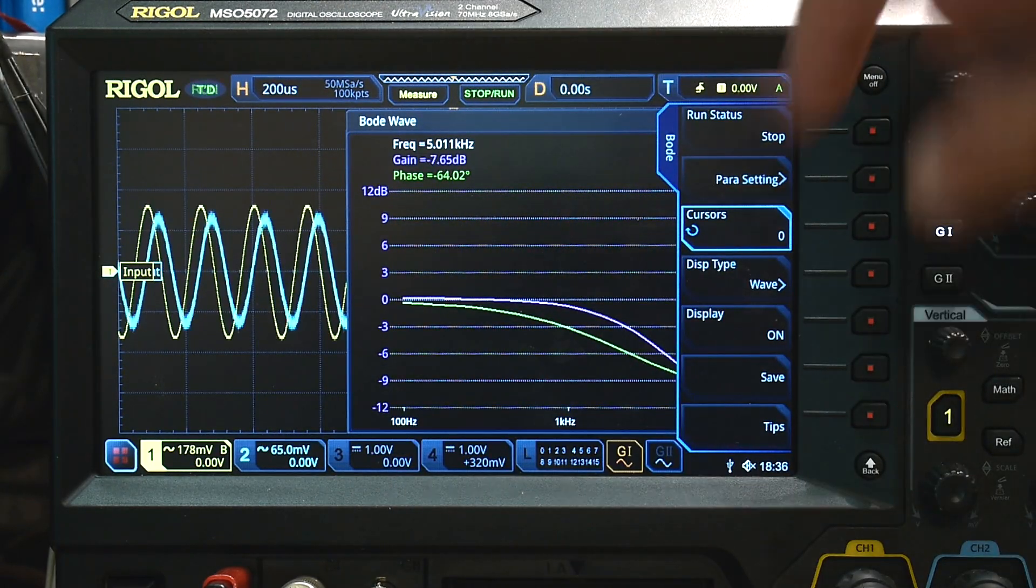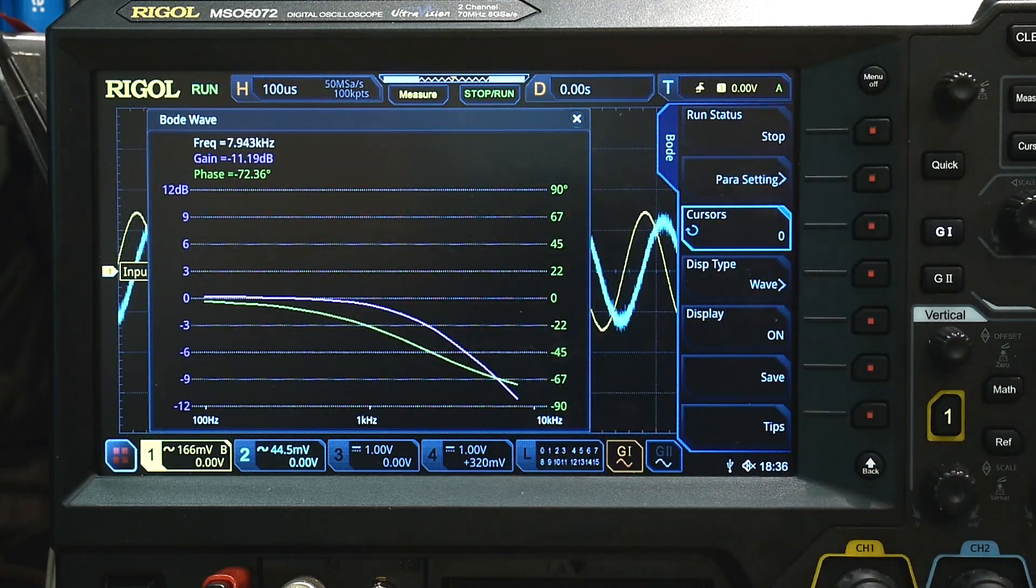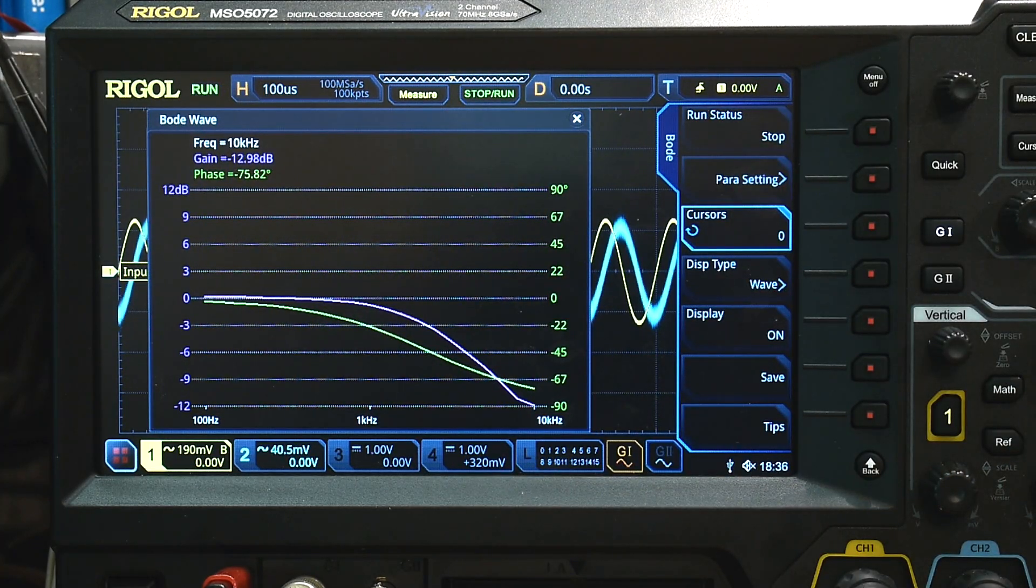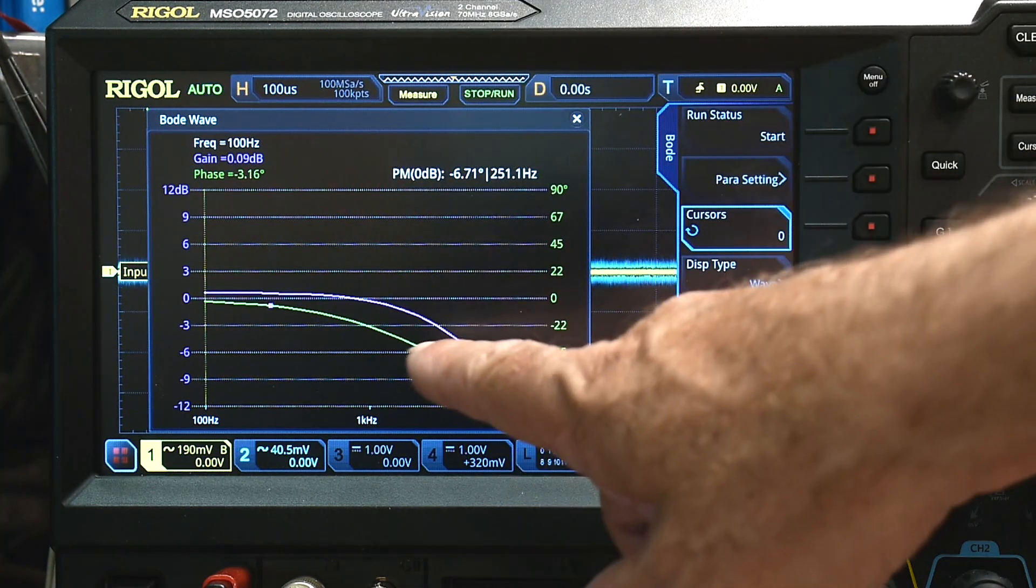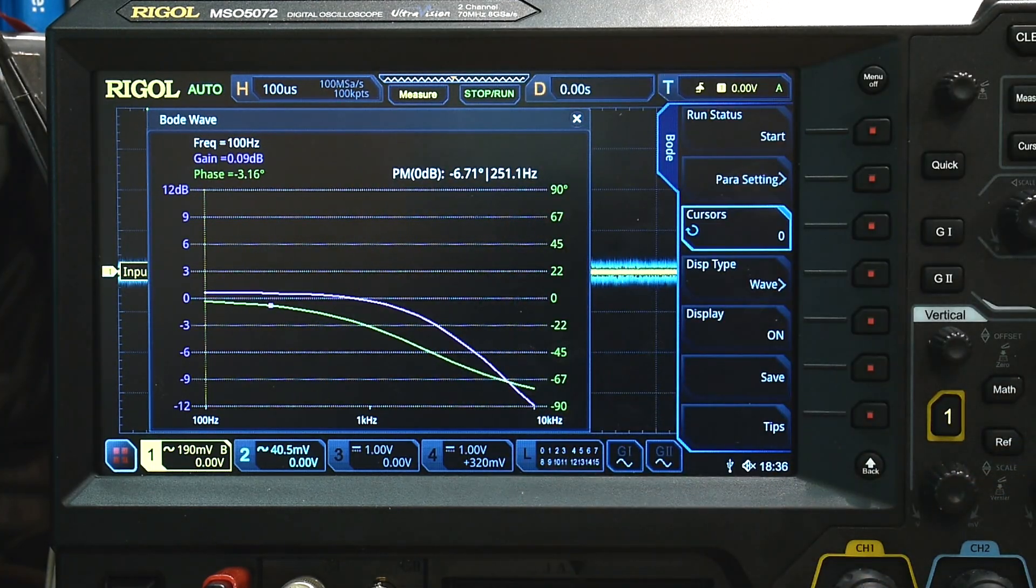All right. And so we'll let it complete here. All right. So this is our Bode plot. This is a Bode plot.